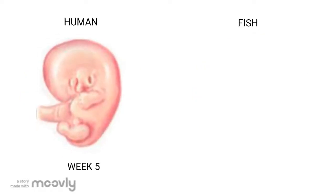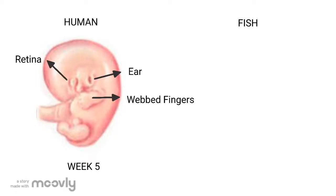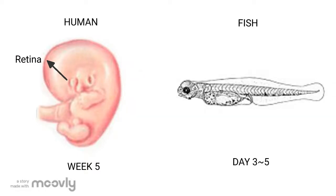During week 6 of the human embryo, webbed fingers and the external ear form, the pigment in the retina appears, and the tail and gill grooves disappear. During these stages of development, in the fish embryo, the gill slits have not yet developed.